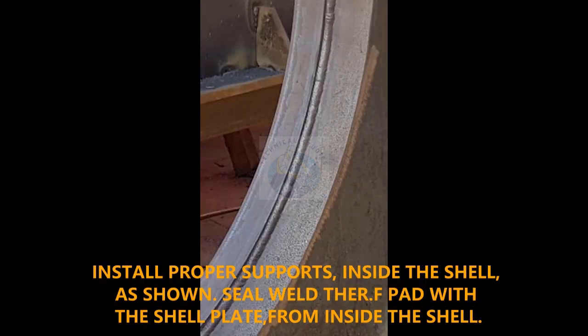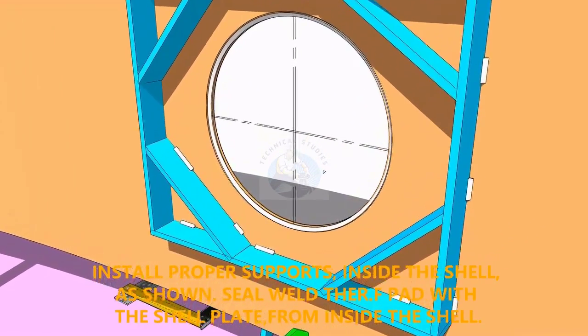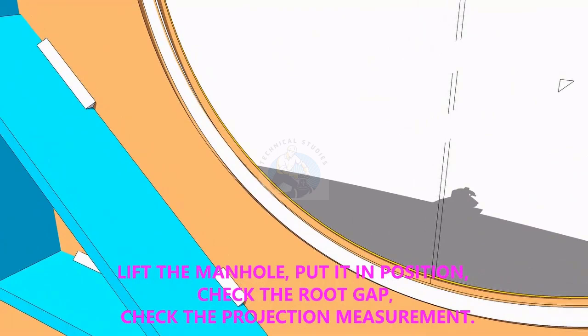Provide proper supports to control the distortion during welding. Weld a run on the joint between the shell plate and the pad plate.